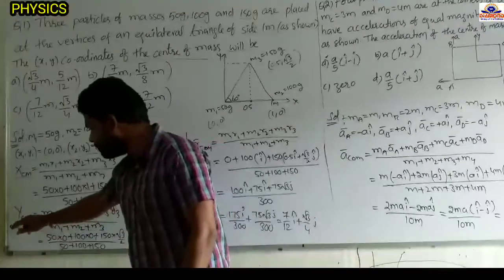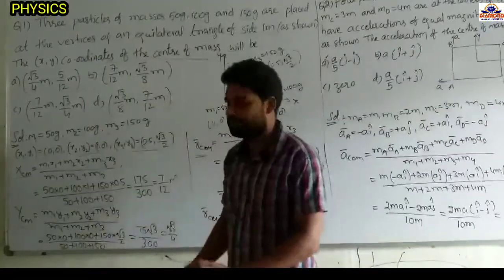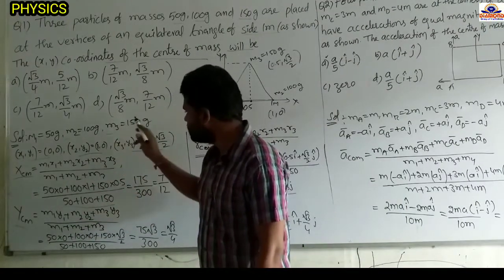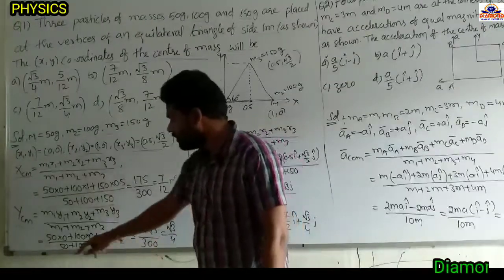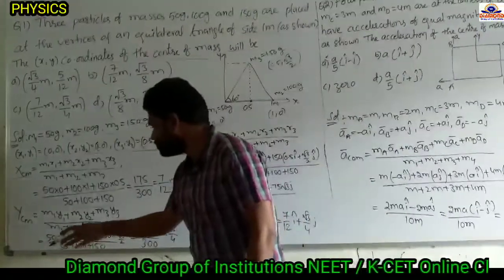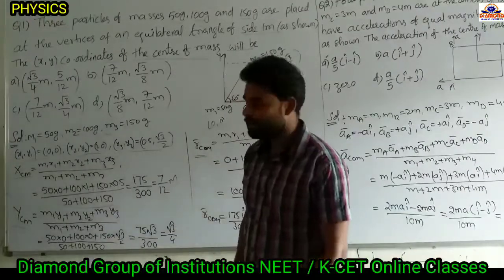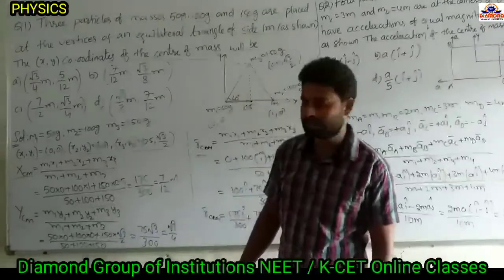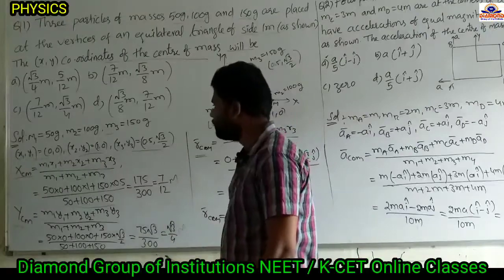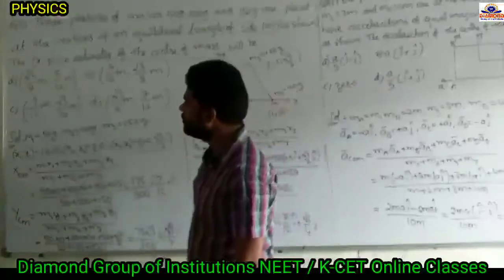Now find the y-coordinate of the center of mass: (m1·y1 + m2·y2 + m3·y3) / (m1+m2+m3). m1=50, y1=0; m2=100, y2=0; m3=150, y3=√3/2. Denominator is 300. Numerator: 50×0=0, 100×0=0, 150×(√3/2)=75√3. So y = 75√3/300 = √3/4 meters. The x-coordinate is 7/12 m and y-coordinate is √3/4 m. This is a 2019 mains question.